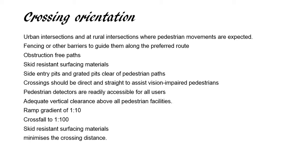The kerb ramp provides smooth movement from footpath towards the road and allows pedestrians, including vision-impaired as well as disabled people, to cross the road and then proceed along the path. The path should be obstruction-free when designing the kerb ramp. Skid resistance needs to be provided for the surface material. Pits and entry pits should be clear of the pedestrian path, and the crossing should be directed as straight as possible for vision-impaired pedestrians.